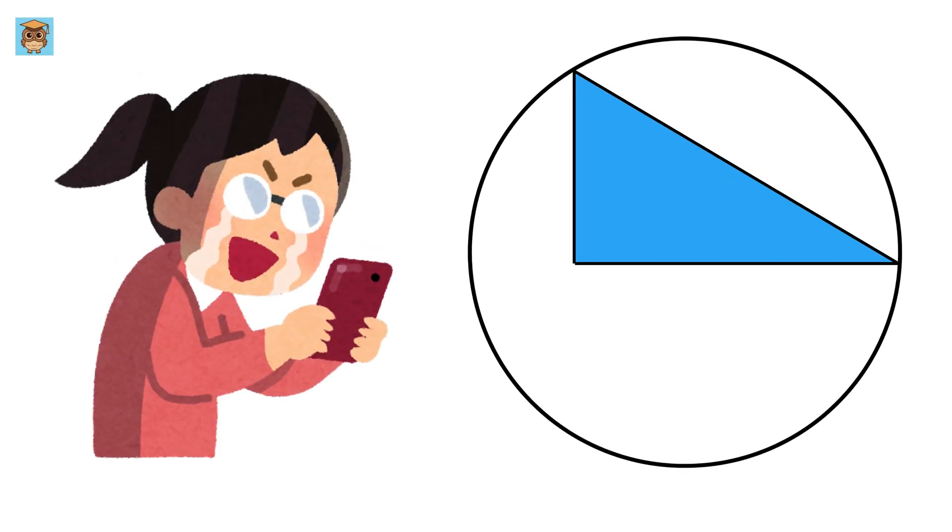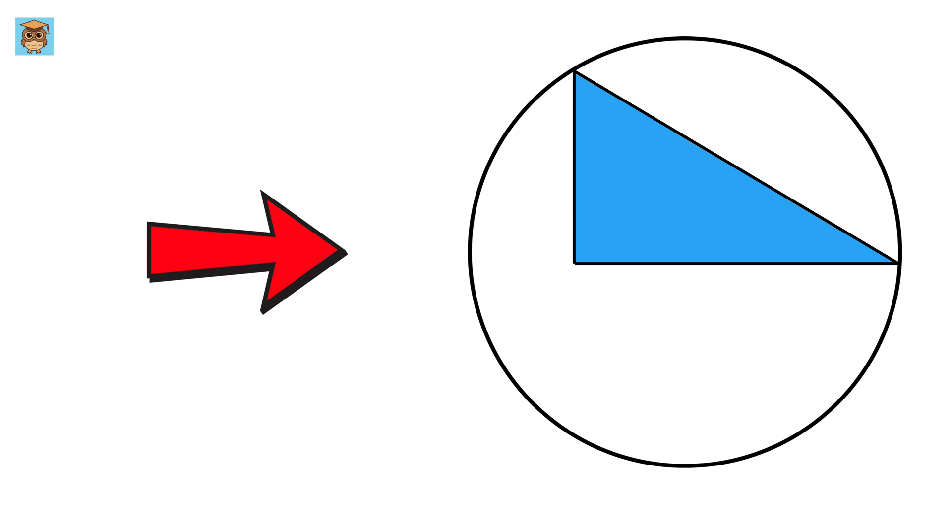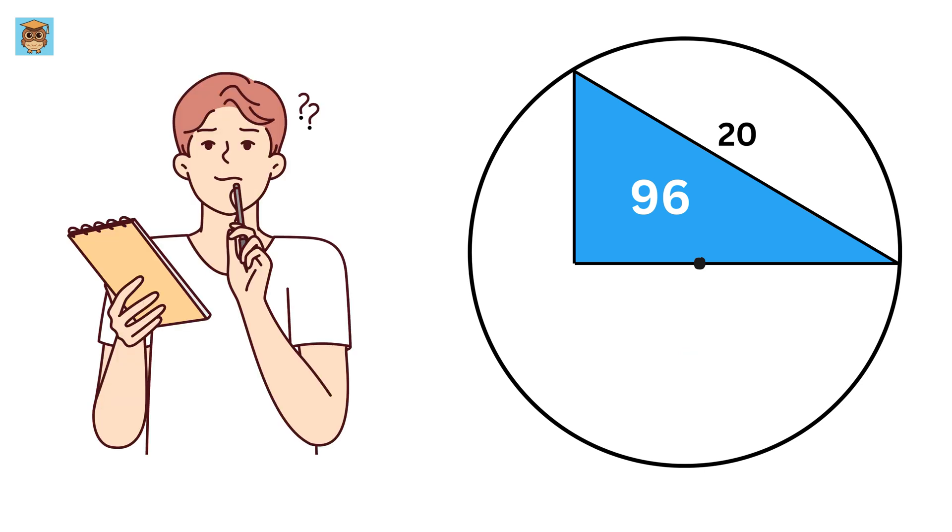This is such an amazing problem. We are given a circle and a right triangle whose area is 96 square units and the length of the hypotenuse is 20. It is given that the center of this circle lies on this side of the triangle, somewhere here. Our job is to find the area of this circle.